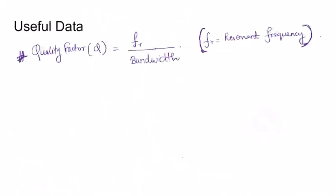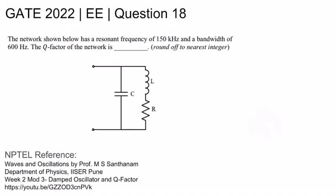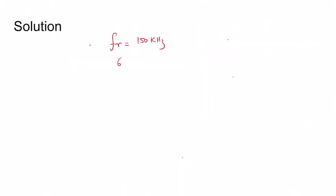The useful data is that for quality factor, you need to divide the resonant frequency by the bandwidth of the circuit. Coming to the solution, the resonant frequency as given in the question is 150 kilohertz and the bandwidth is 600 hertz. Therefore, the quality factor is resonant frequency divided by bandwidth.